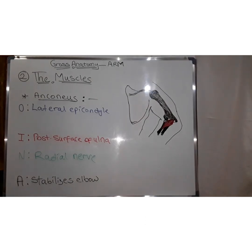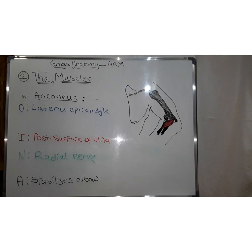Also found in the posterior compartment is a small triangular muscle, the anconeus. Its origin is the lateral epicondyle and it inserts on the posterior surface of the ulna. Its nerve supply is the radial nerve (C7, C8, T1). The action of this muscle is to stabilize the elbow.